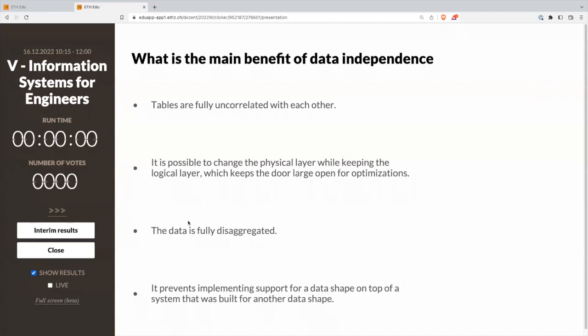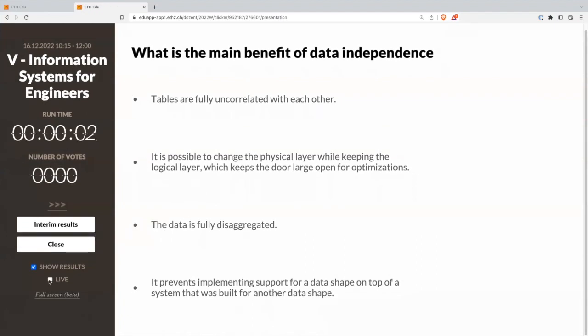Let's start with this question. What is the main benefit of data independence? Is it that tables are fully uncorrelated with each other? Or is it that it's possible to change the physical layer while keeping the logical layer, which keeps the door large open for optimizations? Or is it that the data is fully disaggregated? Or is it that it prevents implementing support for a data shape on top of a system that was built for another data shape? As we make progress, the time to answer will get a bit shorter. Here, I give more time. It's the first question.